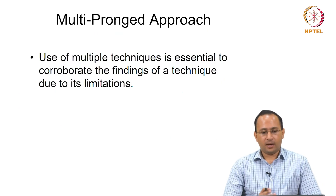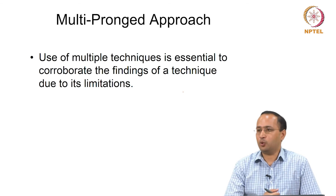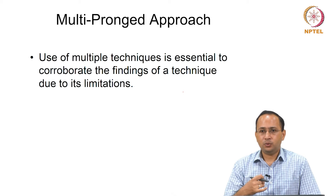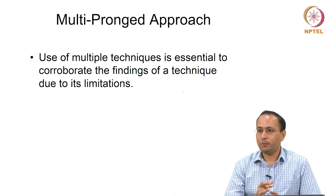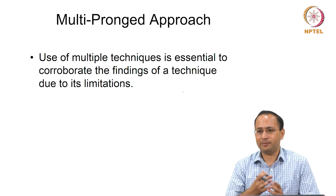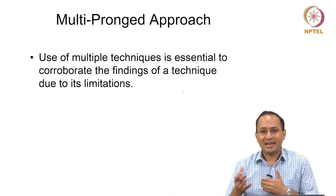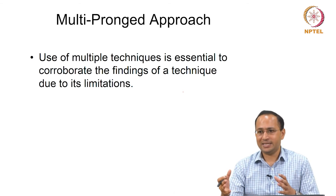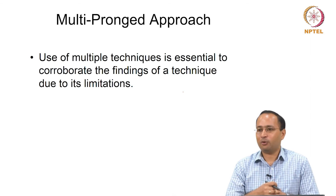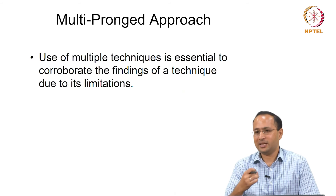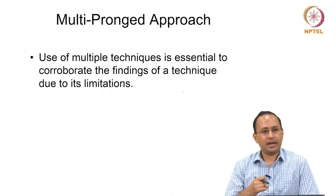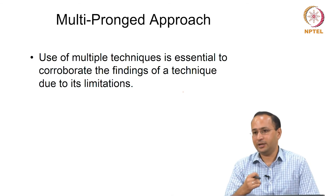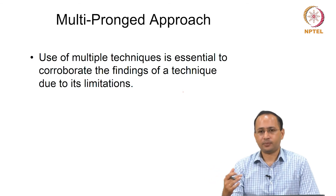The idea is to have a multi-pronged approach. It is very important to use multiple techniques to corroborate findings of a particular technique. We may get something from one technique, but it may not give us all the information — sometimes we need validation. It is always good to keep in mind that each technique has its limitation. For example, X-ray diffraction is widely used to identify crystalline phases, but if your material has an amorphous phase, you will need to use some other technique.